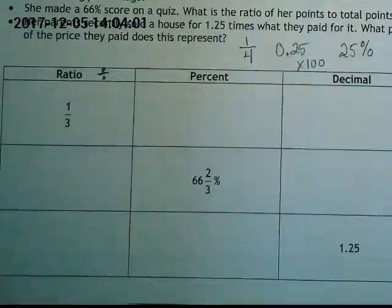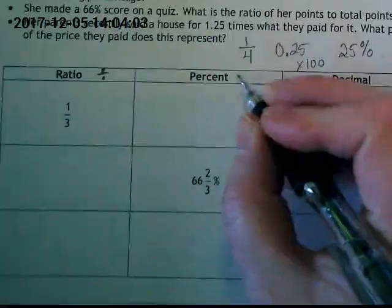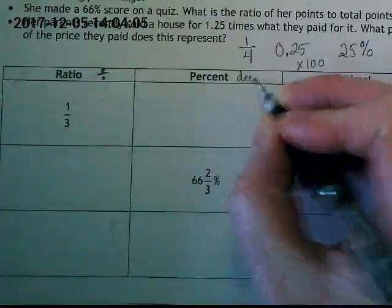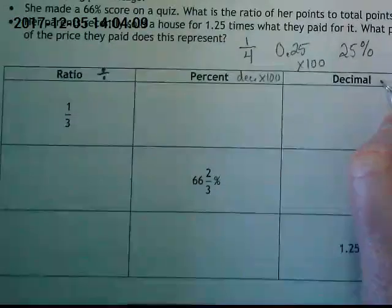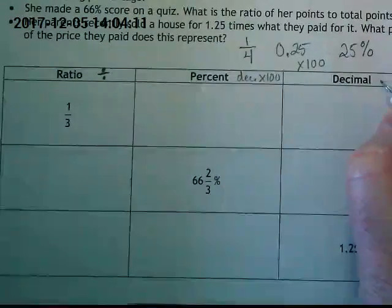We're going to use that same strategy where we can do a decimal times 100 for the percent, and a decimal can be gotten by dividing the fraction.